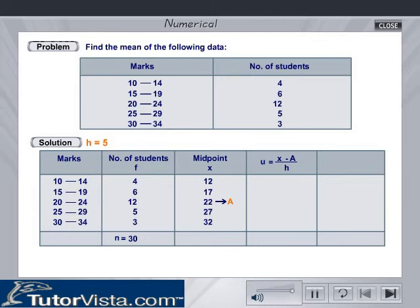You can calculate the size of the class intervals. Let the assumed mean a be equal to 22. The formula for deviation u is equal to x minus a by h. Therefore, u is equal to x minus 22 by 5.